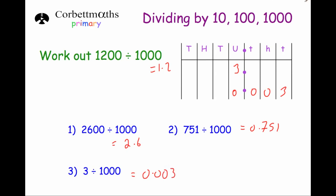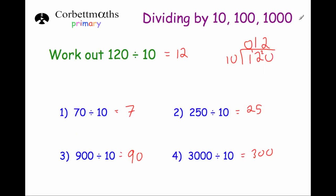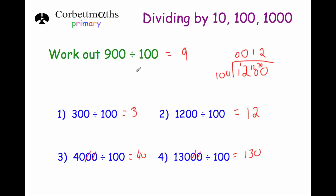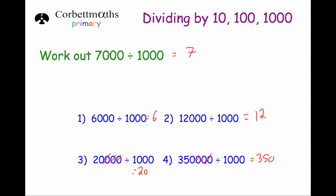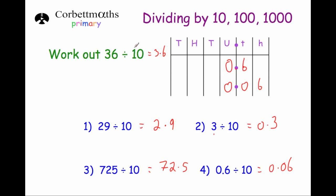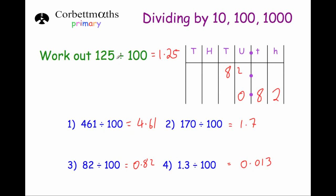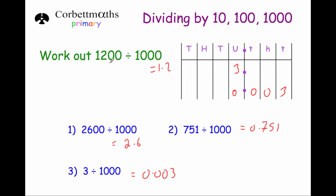So that's how to divide numbers by 10, 100, and 1,000. If dividing by 10 and the number ends in zeros, take off one zero. If dividing by 100 and the number ends in at least two zeros, take off two zeros. If dividing by 1,000 and the number ends in at least three zeros, take off three zeros. If the number doesn't end in enough zeros, move all digits one column to the right for ÷10, two columns to the right for ÷100, or three columns to the right for ÷1,000 in the place value table.